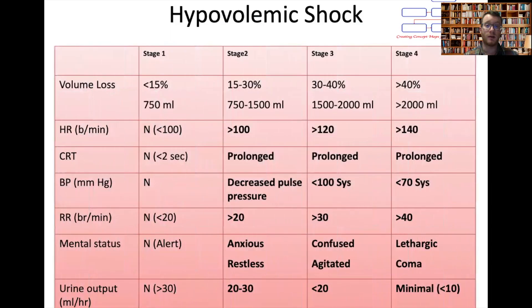Hypovolaemic shock can occur with PR bleeding. Stage one is where we've lost under 15% — just under a litre of blood — and the body is generally able to compensate, so haemodynamic parameters are fairly stable. Stage two is over roughly a litre of blood — patients start to become tachycardic and tachypnoeic, capillary refill time is prolonged beyond two to three seconds, and blood pressure may not yet drop below 100 but there will be a decreased pulse pressure.